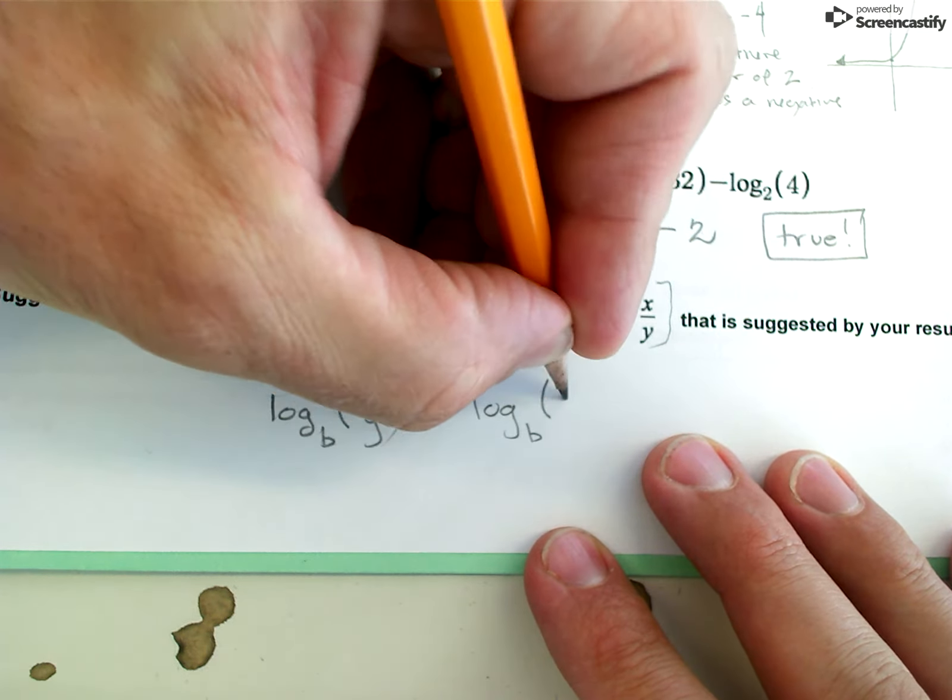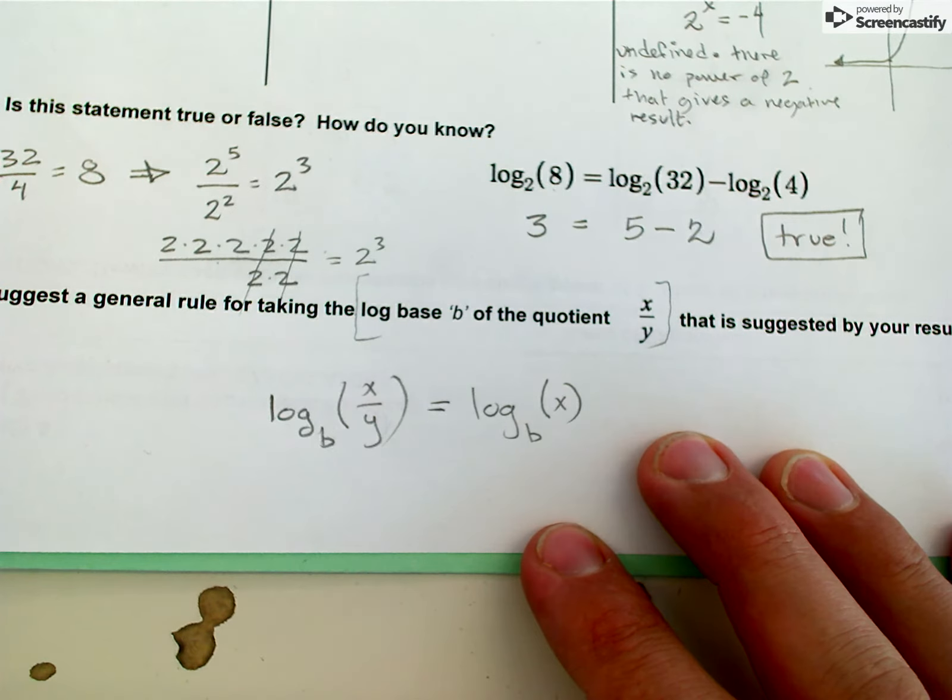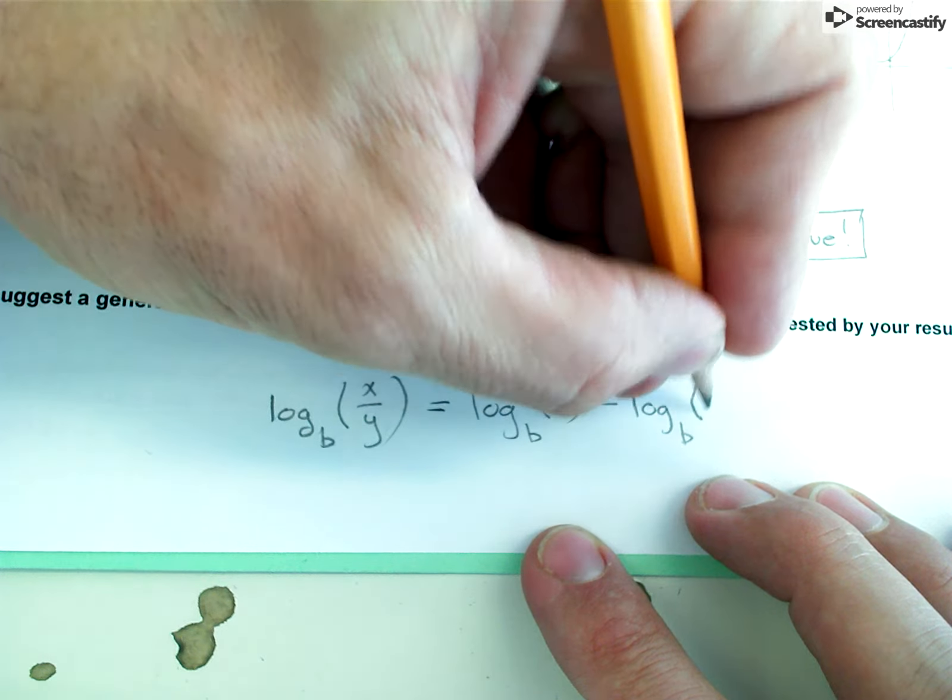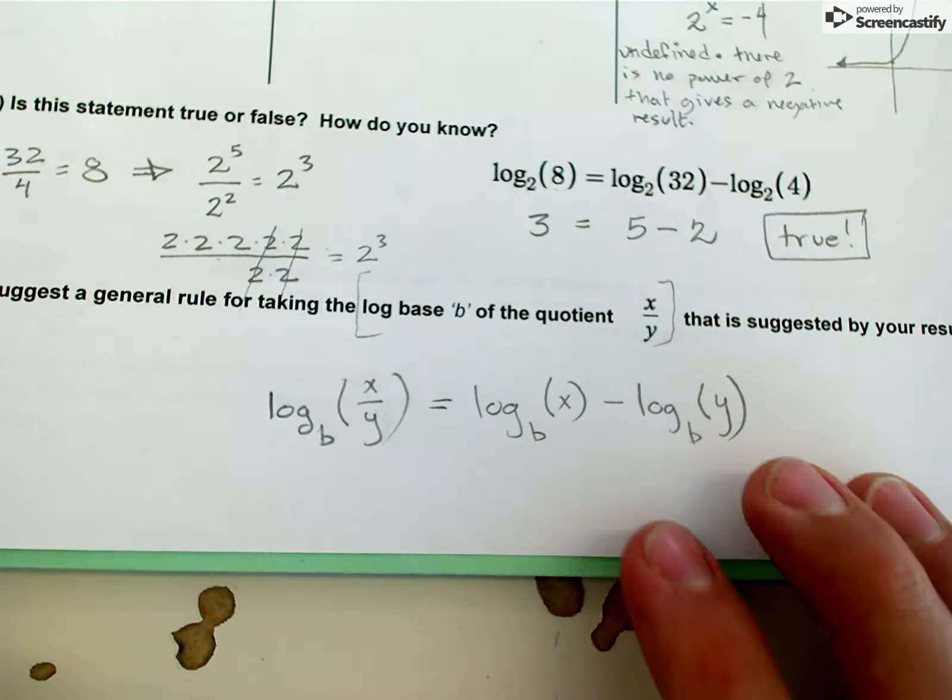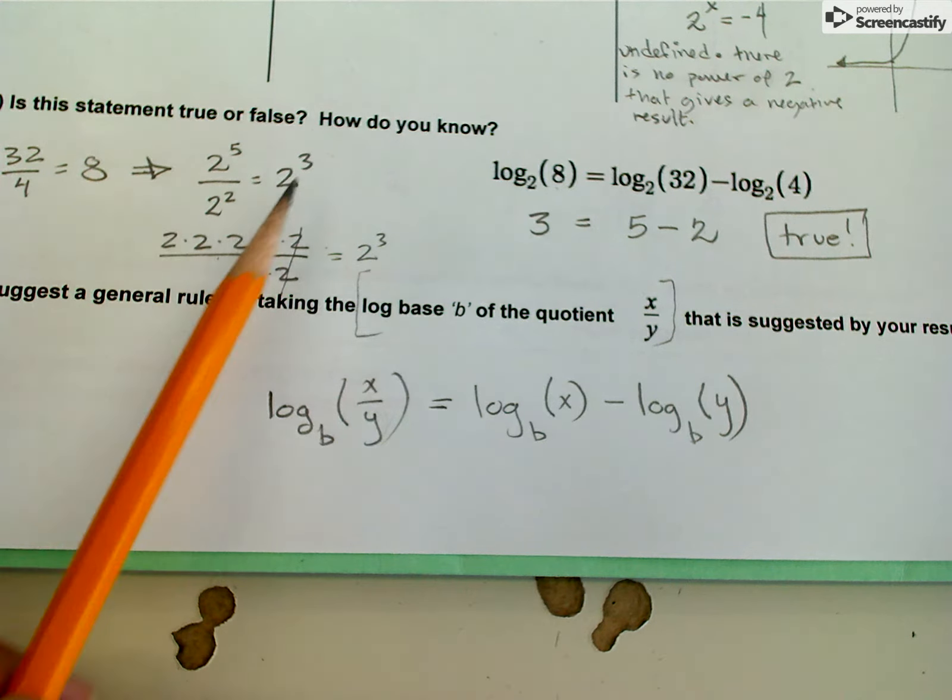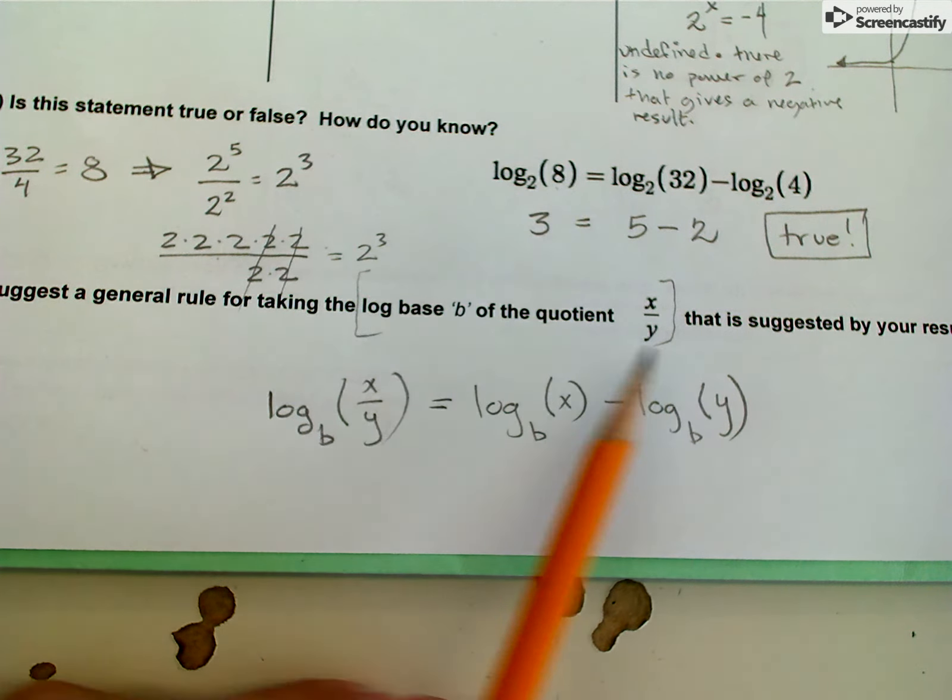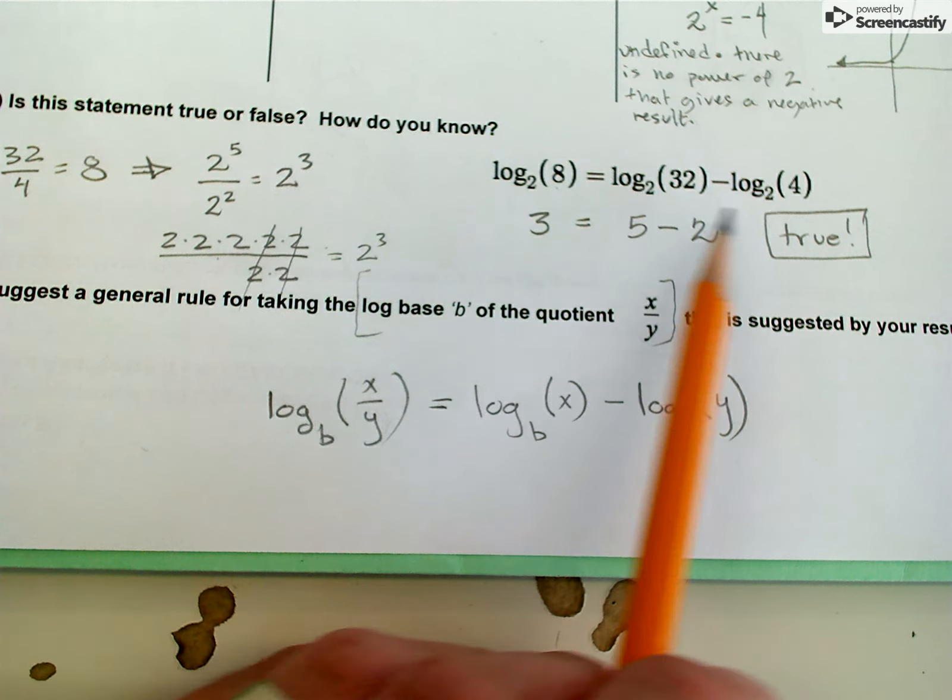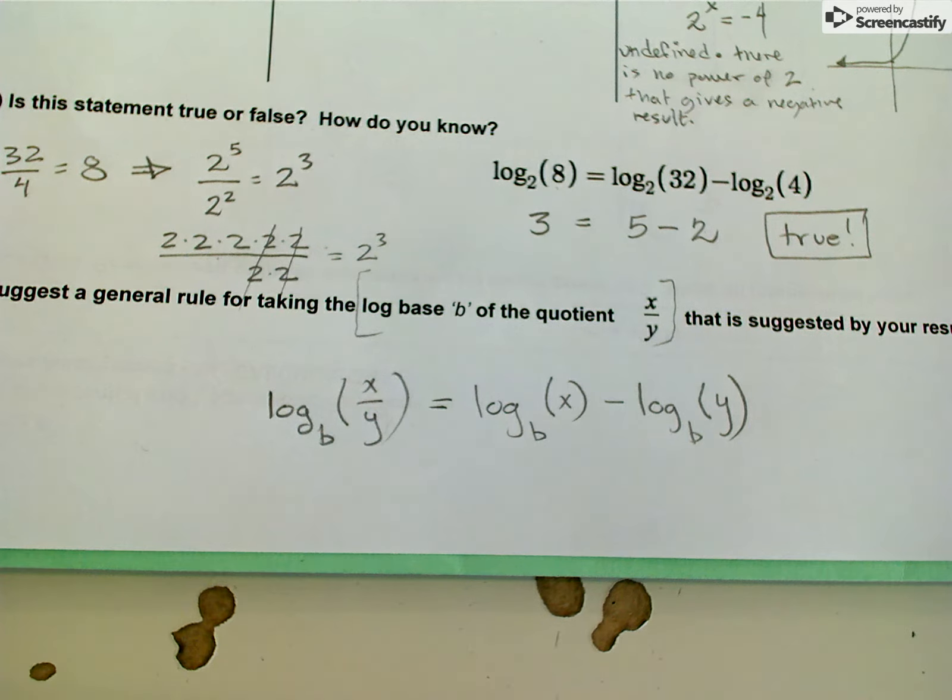I'm just going to write it: log base b of x, that's my 32 in this problem, minus log base b of y. And what we have here is actually the quotient rule for logarithms. We have a quotient rule for exponents and now we have this corresponding quotient rule for logarithms. It's just based on the pattern that we see in this problem.